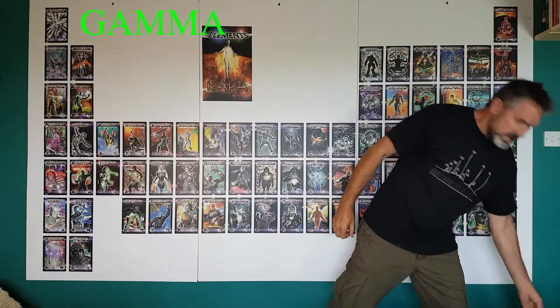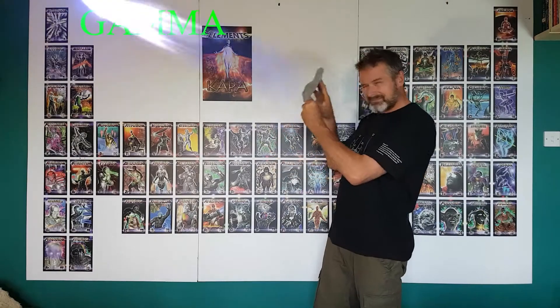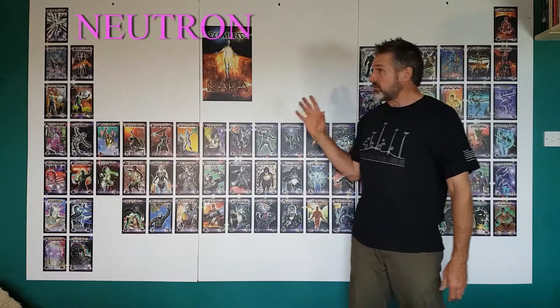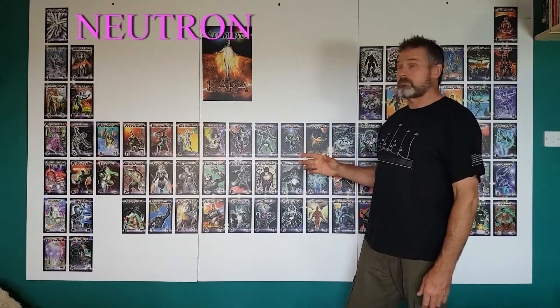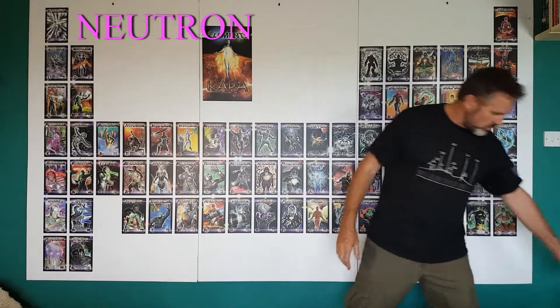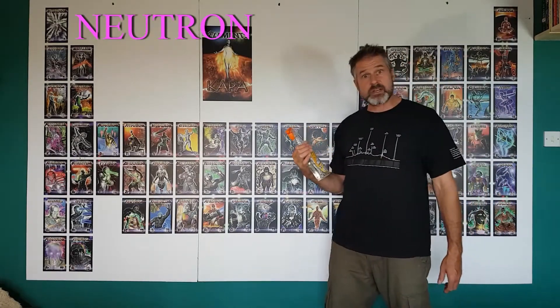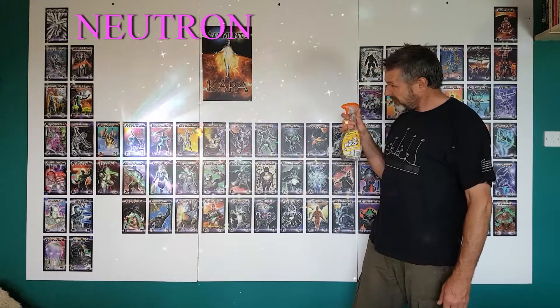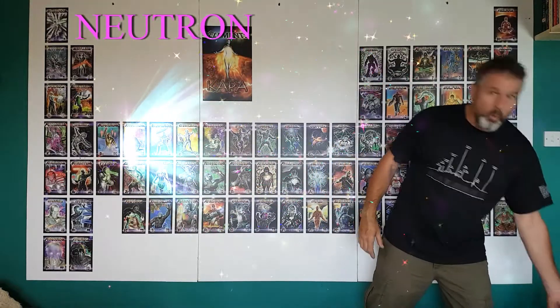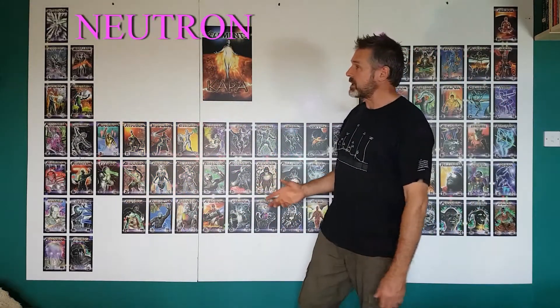The next type is gamma radiation, which is more like light and X-rays — really high-powered stuff that requires lead to stop it. Finally, there's neutron radiation, where the nucleus spits out a neutron. To stop that, you just need something with hydrogen in it — water will do, or plastic, since that also contains hydrogen.